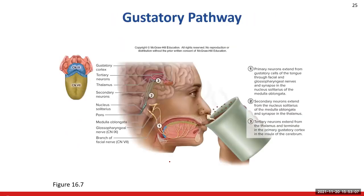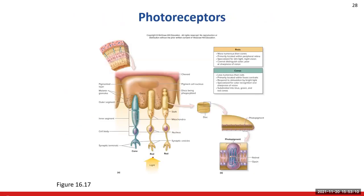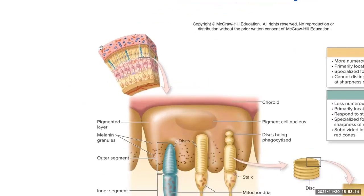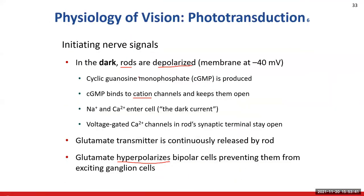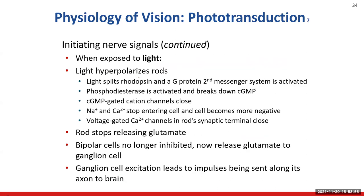Looking at the retinal layers: this layer here are the photoreceptors, these are the bipolar cells, and these cells are your ganglion cells. So the photoreceptor cells are going to hyperpolarize the bipolar cells so they are not going to be able to trigger an action potential in the ganglion cells. That's what happens when we are dealing with the rods in a dark situation — we prevent the ganglion cells from sending an action potential to the brain.